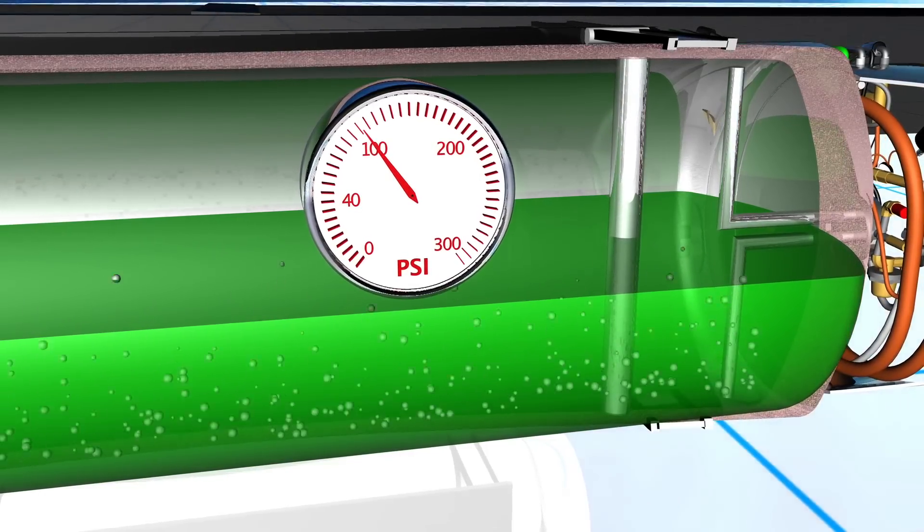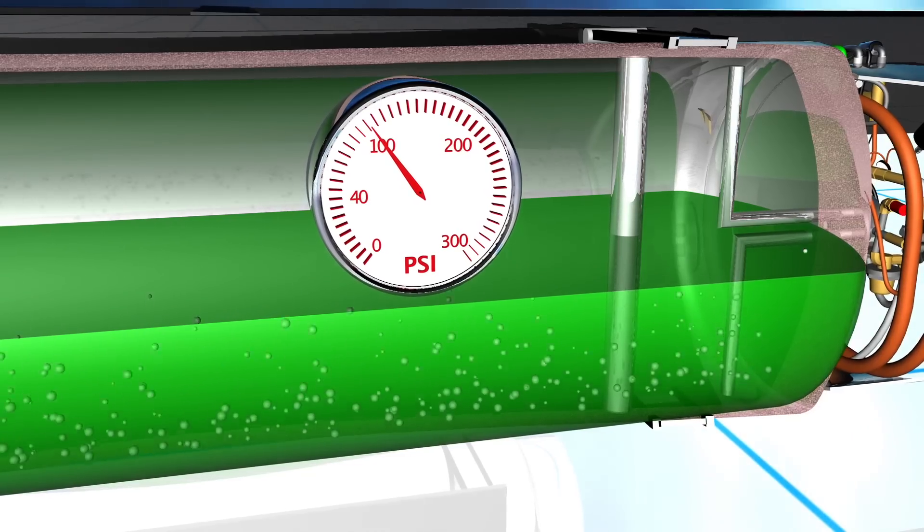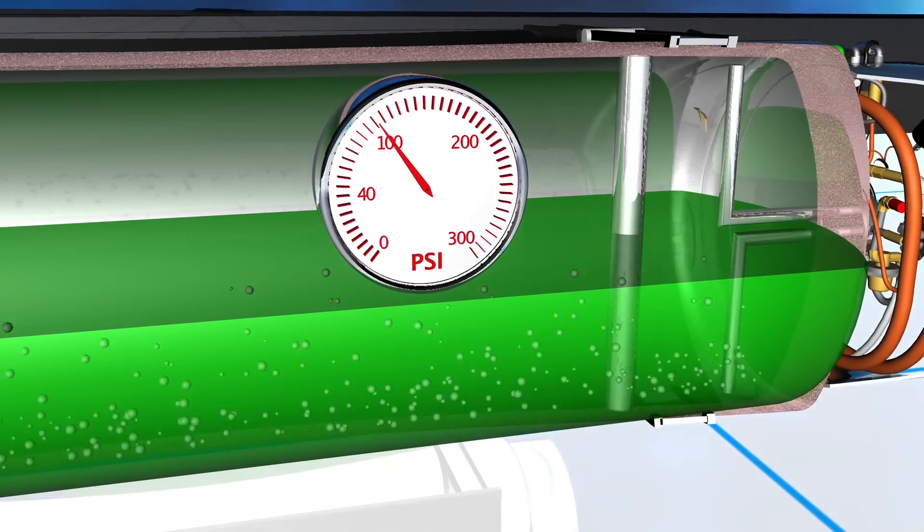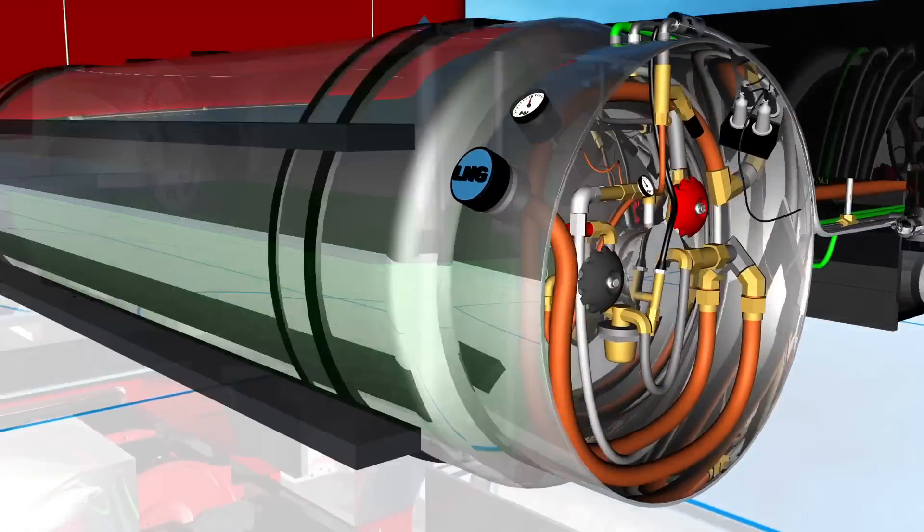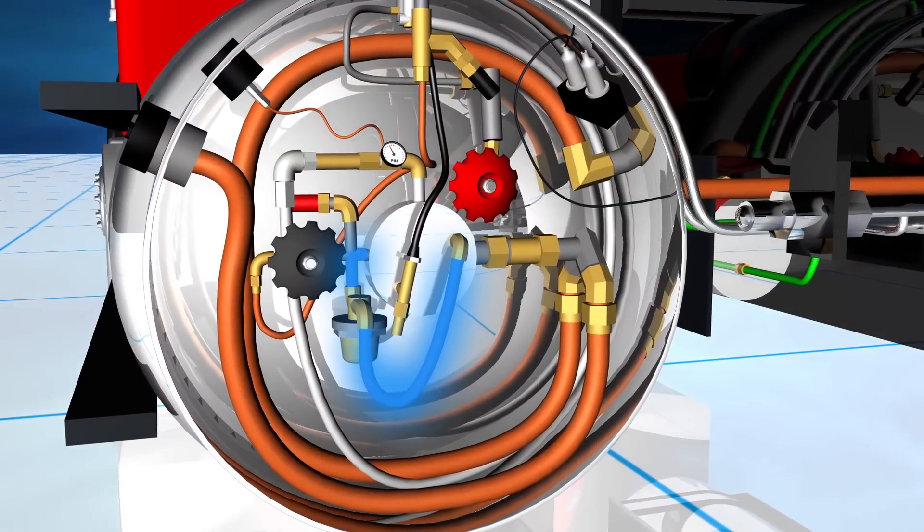Remember, as the tank warms over time, the tank pressure will slowly increase. By allowing vapor to be withdrawn from the tank, the pressure control regulator keeps tank pressure from getting too high.